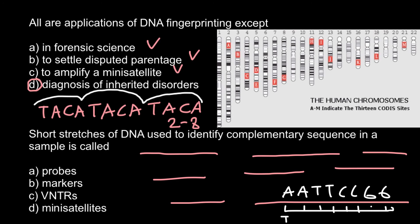So our primer should be T, T, A, A, G, G, C, C. We can also use radioactive nucleotides here, or we can associate this primer with some fluorescent proteins. This is what we call probes, and this is going to be answer A.